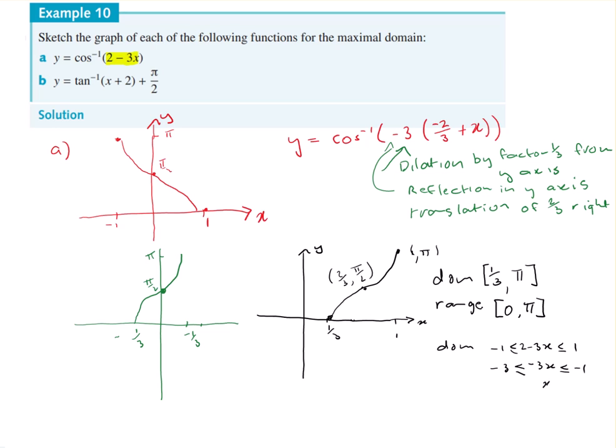x is... don't forget when you divide by a negative number, you've got to reverse the sign. So that becomes one and that becomes a third.